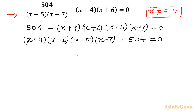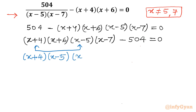Now if we take the product of (x plus 4) with (x plus 6) and (x minus 5) with (x minus 7), there won't be any useful substitution — we get x² + 10x + 24 and x² − 12x + 35. So instead, I will consider the first and third brackets together: (x plus 4)(x minus 5), and the remaining two: (x plus 6)(x minus 7). Minus 504 equal to 0.